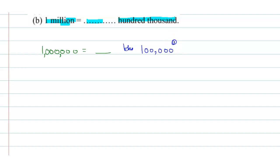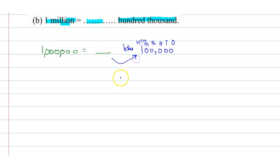So this is 1s, 10s, 100,000, 10,000, and 100,000. Now, which number is multiplied with 100,000 to get 1 million? When 100,000 is multiplied with 100, then it will get 1 million.